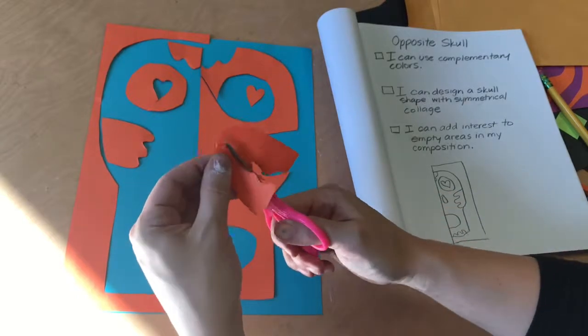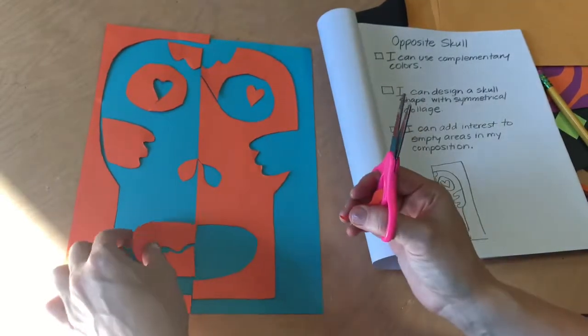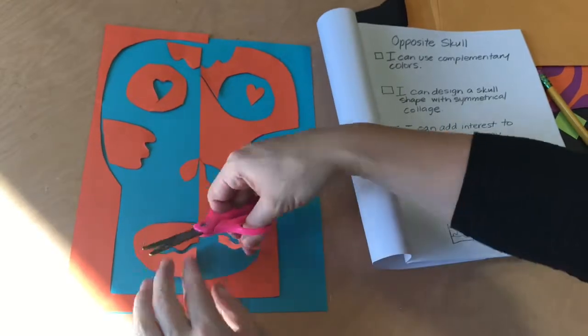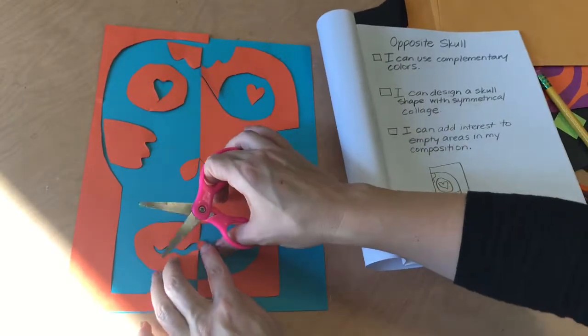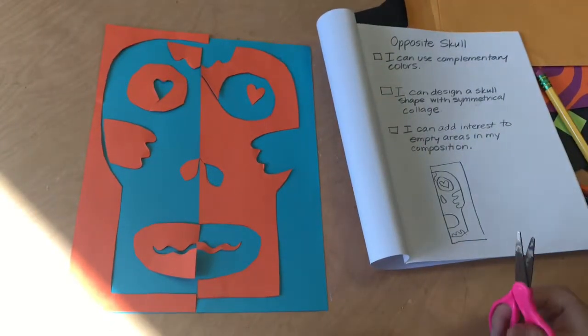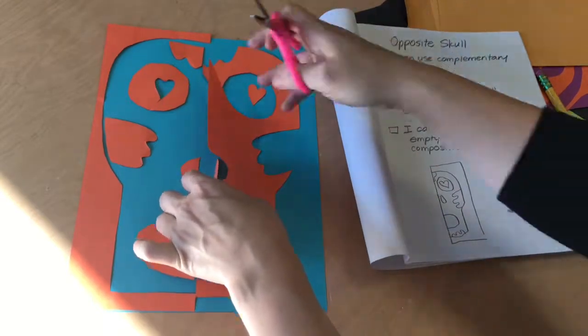My advice is to keep all of your pieces laying in one area. You might want to add a detail that makes it look like your skull has teeth or an opening in their mouth.